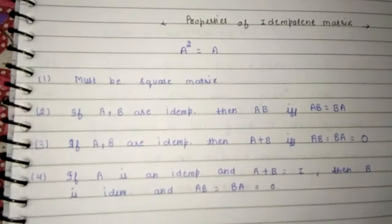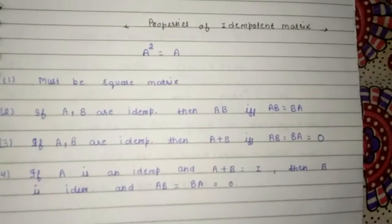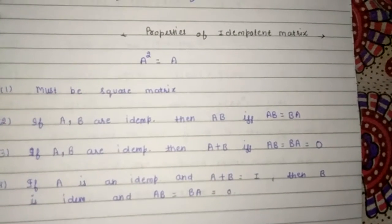Second property: if A and B are idempotent, then AB is also idempotent if and only if AB is equal to BA.